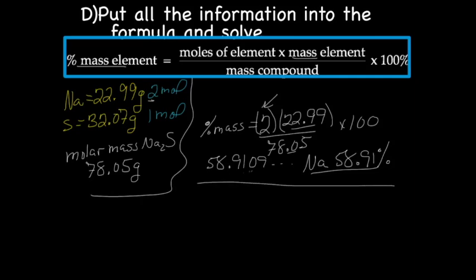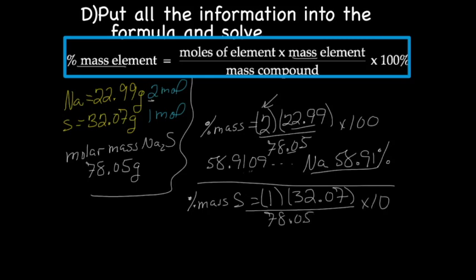We then do this all over again, but this time with sulfur. So percent mass of sulfur equals the moles of sulfur, this time we only have one, times the mass of sulfur, which is 32.07, divided by the mass of our compound, which is Na2S, which is 78.05 multiplied by 100.